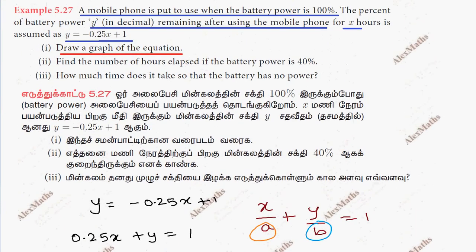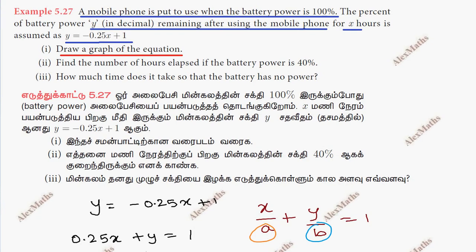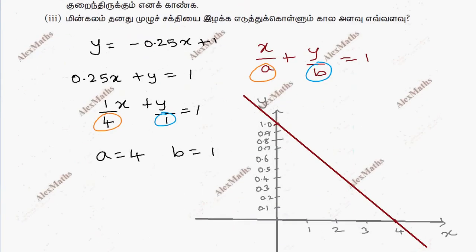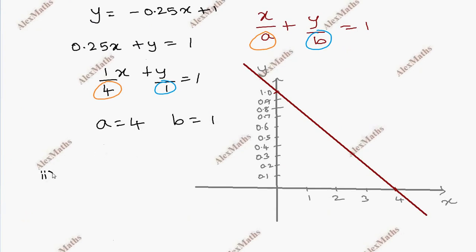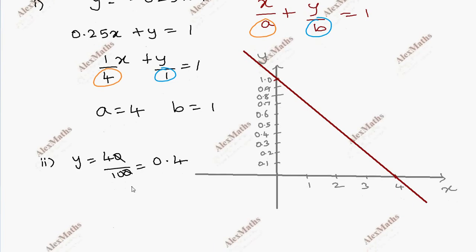First part is draw the graph. Now for the second part: the number of hours when the battery power is 40%. The battery percentage is 40%, which is 40 divided by 100, so y is 0.4.